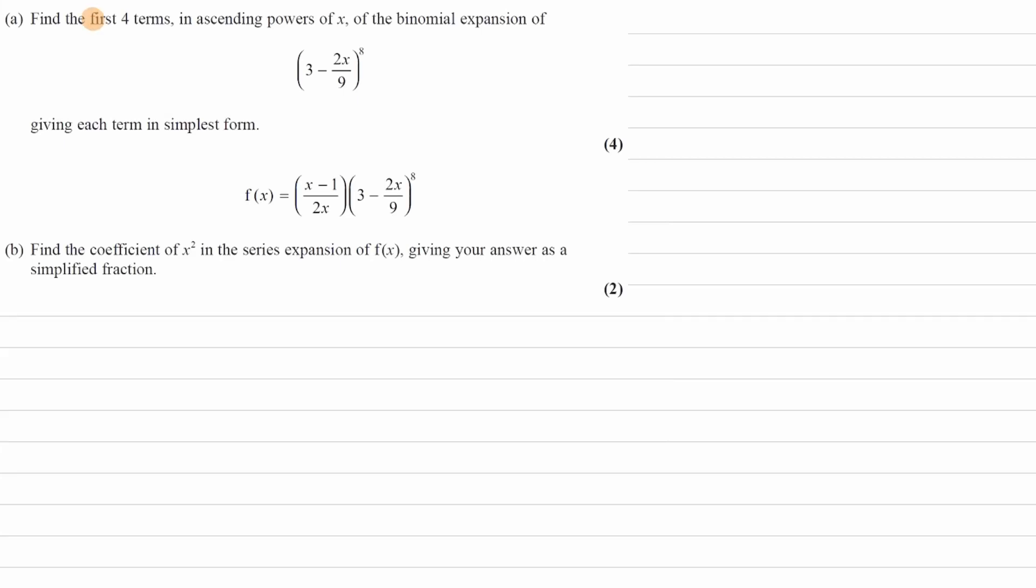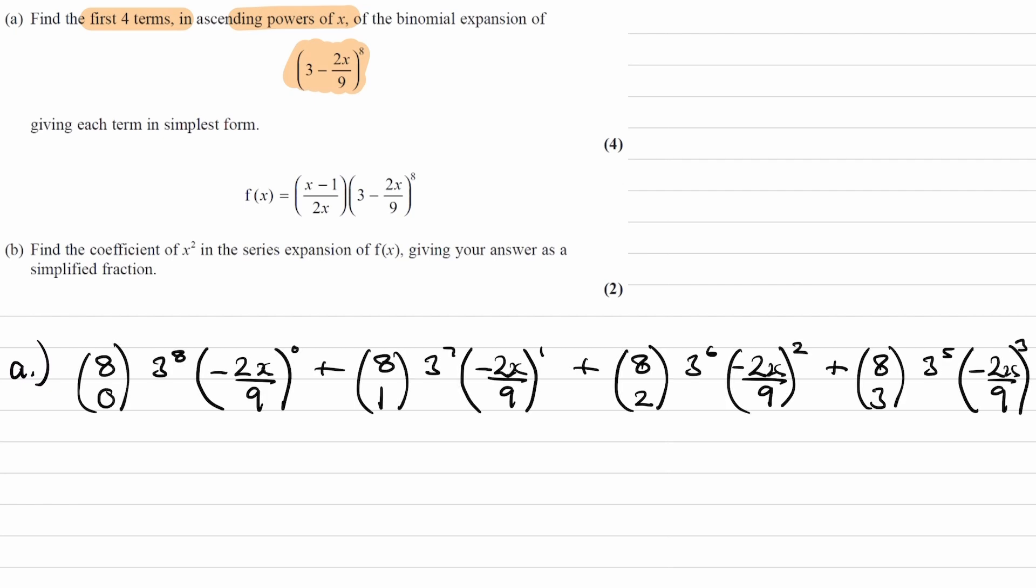Find the first four terms in ascending powers of x, the binomial expansion of (3 - 2x/9) to the power of 8. Okay, so I'll just write out the expansion without evaluating any of the numbers just yet. So these are the first four terms.